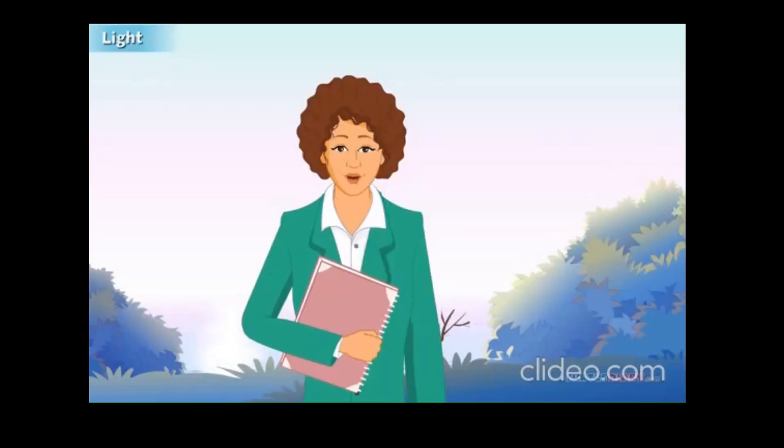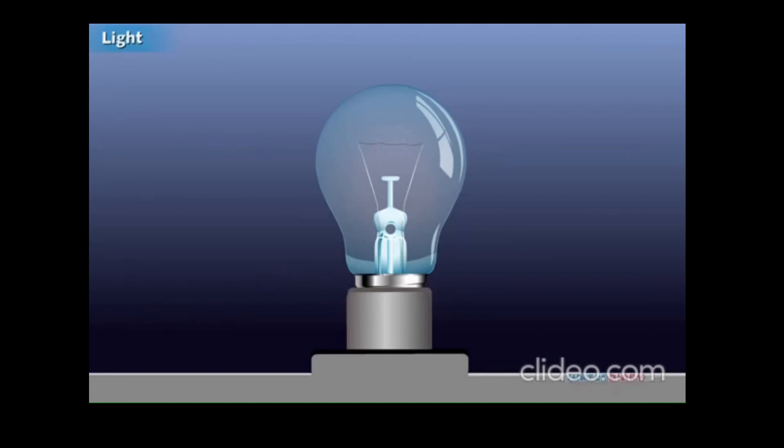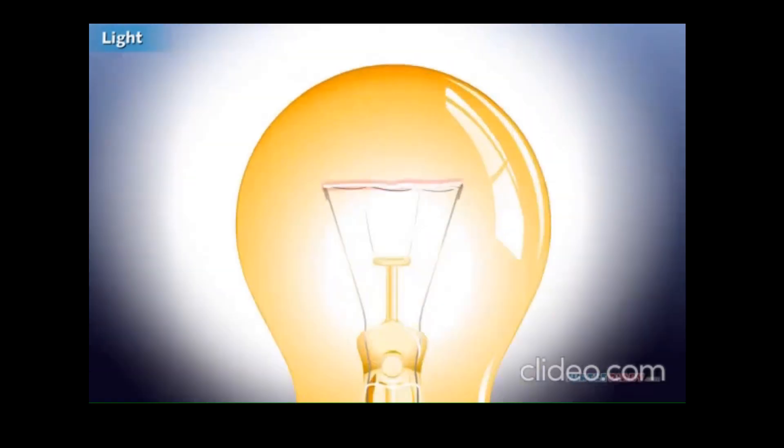Let us now see some man-made sources of light. These days, most people use electric lights. An electric light bulb is made of a wire that glows when a current flows through it.